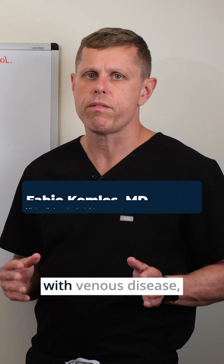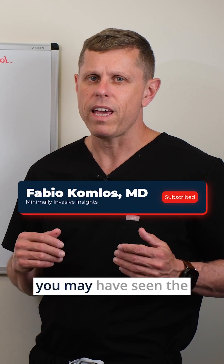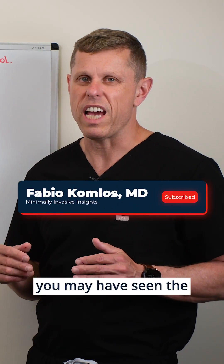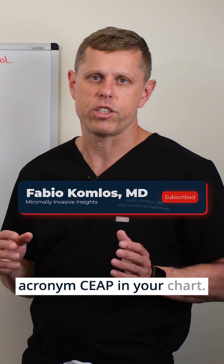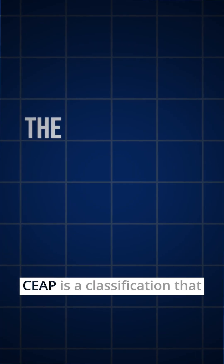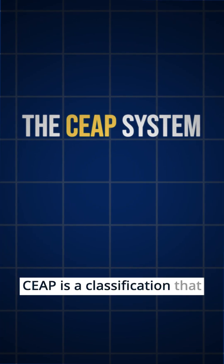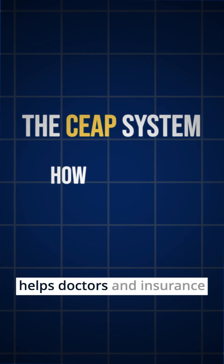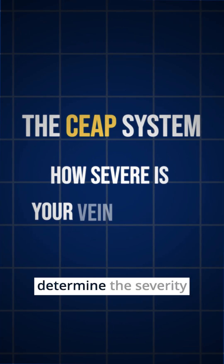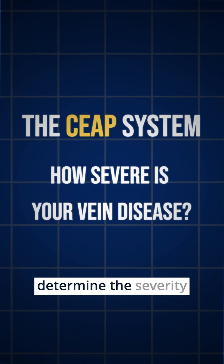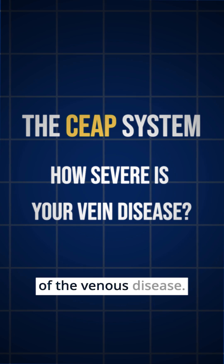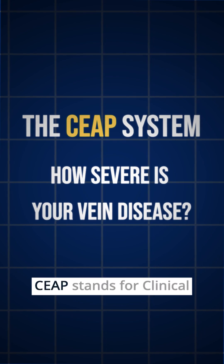If you have been diagnosed with venous disease, you may have seen the acronym CEAP in your chart. CEAP is a classification that helps doctors and insurance determine the severity of the venous disease.